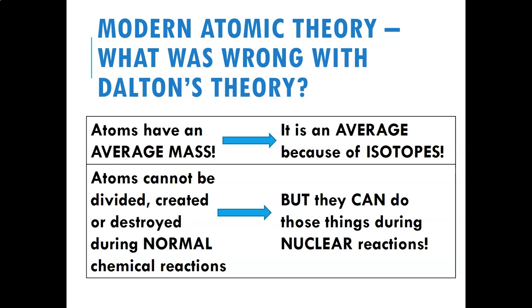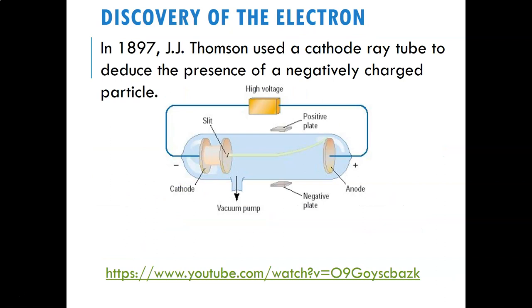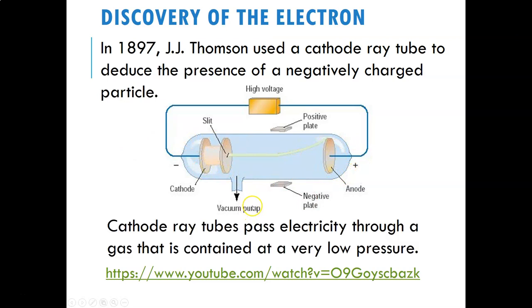One of the things that really made people realize that Dalton's theory was wrong was when we discovered the electron. JJ Thomson discovered that the atom had a separate particle inside of it that was negatively charged. Thomson used what's called a cathode ray tube — a tube that's vacuumed out with a gas inside. You pass electricity through it and you're going to see a beam of electrons come out. If you put a magnet on one side, the beam of electrons will be attracted to the positive magnet, telling them that this beam of particles must be negatively charged.